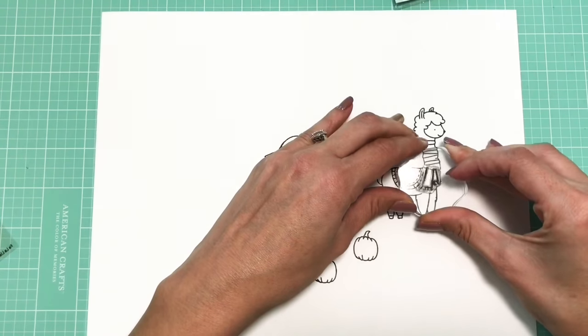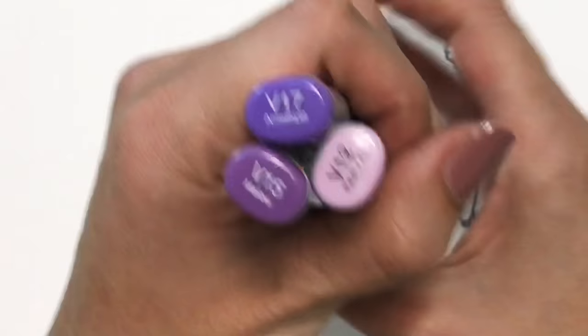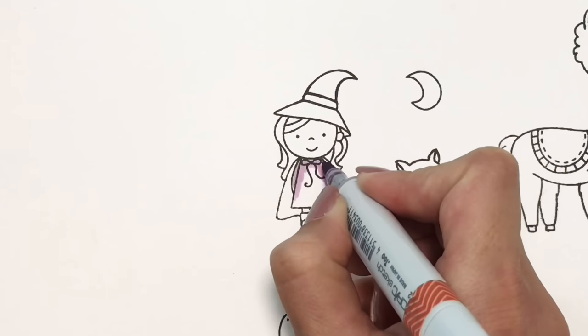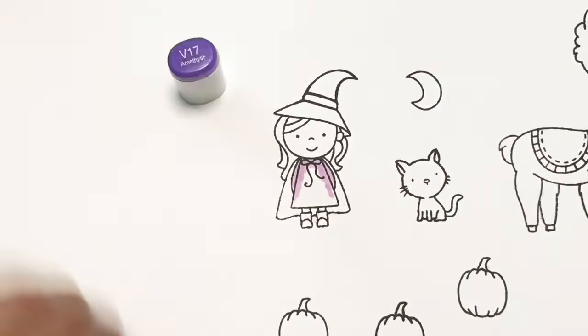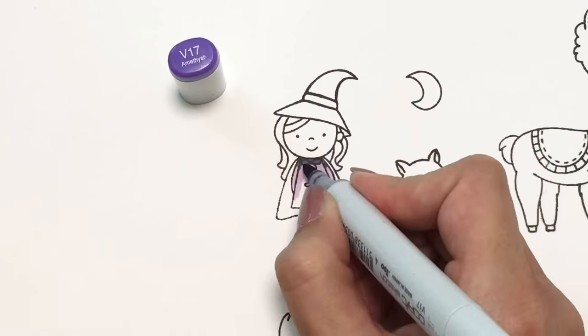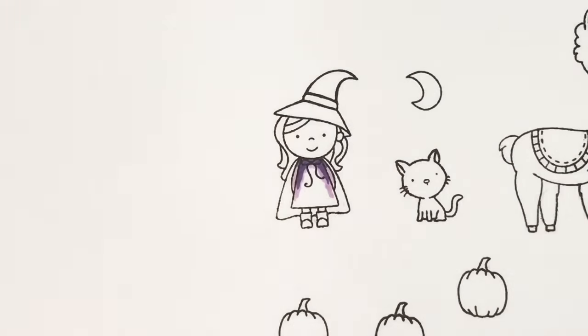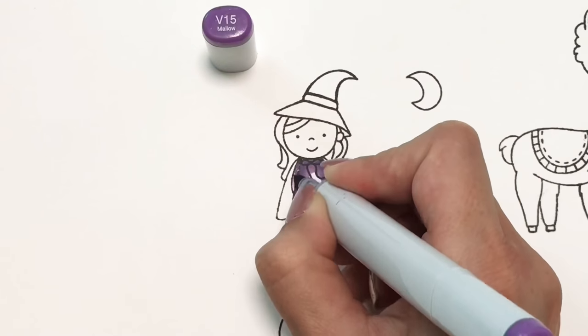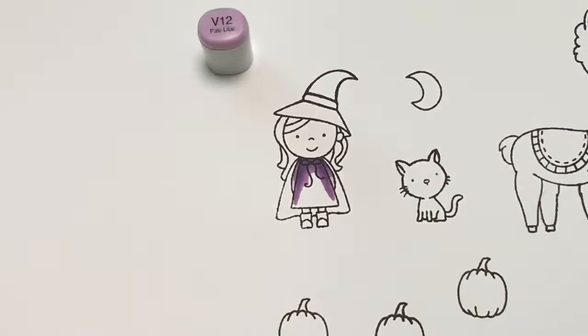I have stamped them down in some Copic friendly ink because I am going to be using my Copic markers to color everything in here today. I'm doing some really simple coloring because these images are very simple to color. They don't have a lot of lines and a lot of different areas for shading and things like that. So they're very simple.